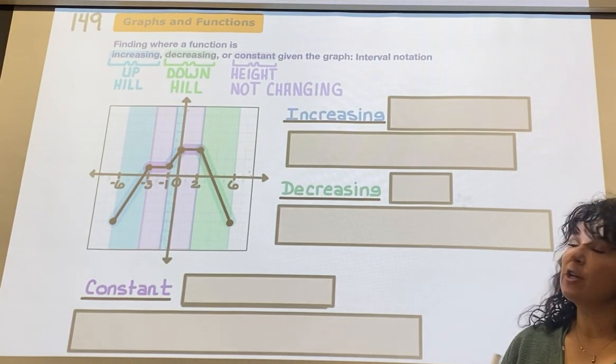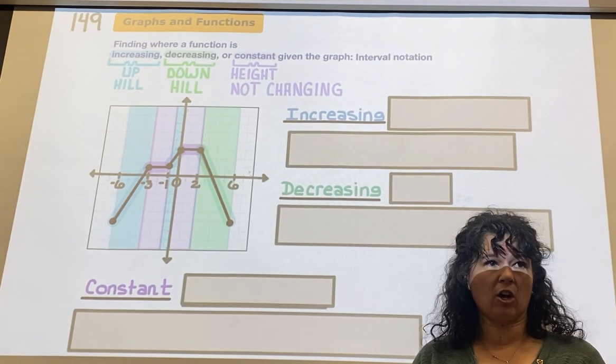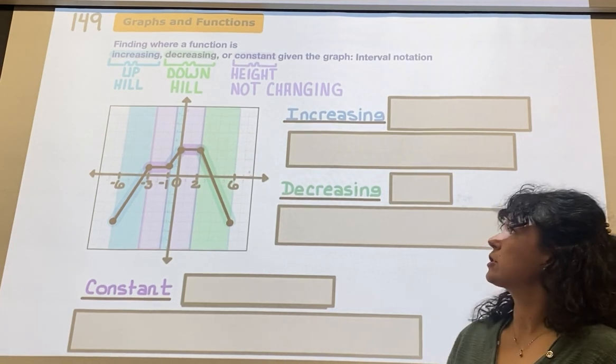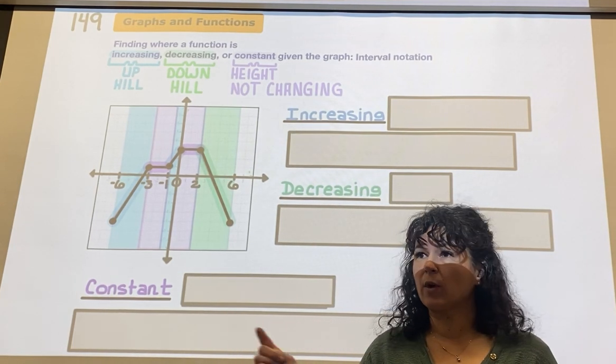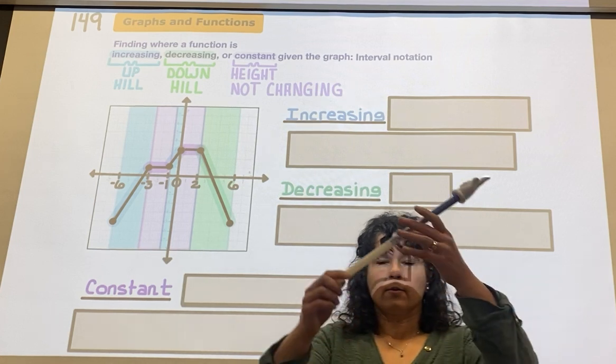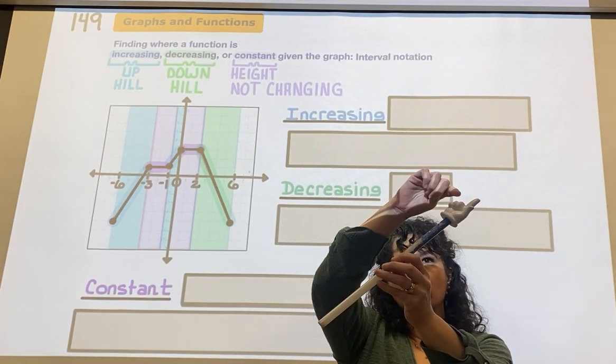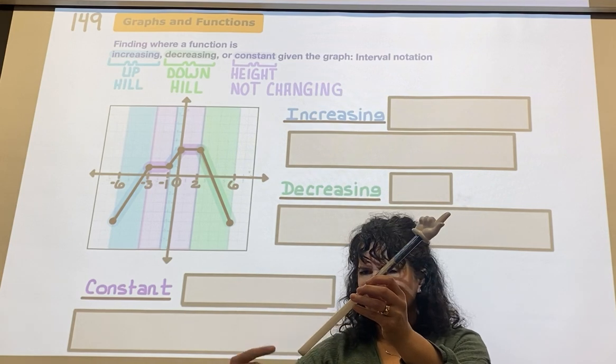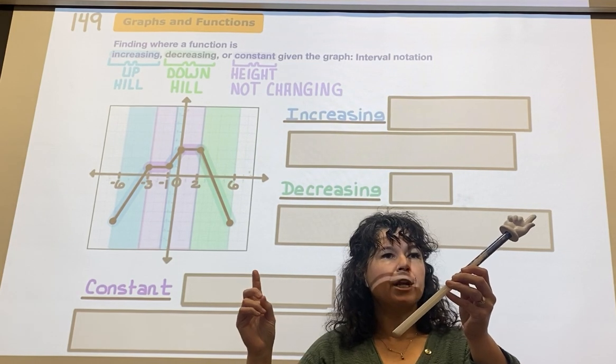For problem 149, we want to know where the function is increasing, decreasing, and constant. First of all, if it's increasing, it means you're going uphill. If you look at this line here, some of you might say you're going downhill or uphill, but when you read a line, you read it just like a book from left to right.